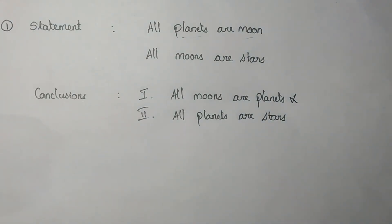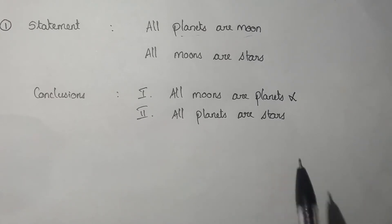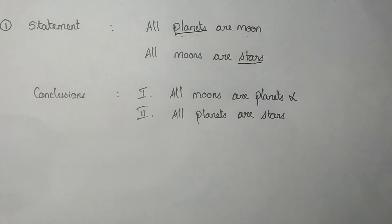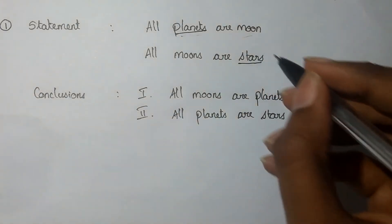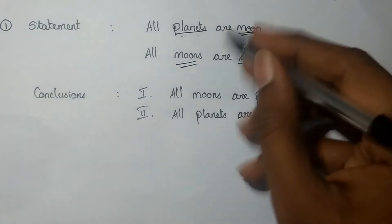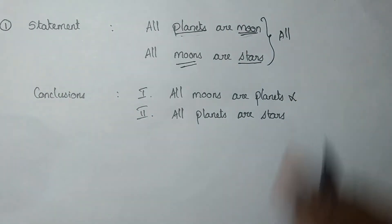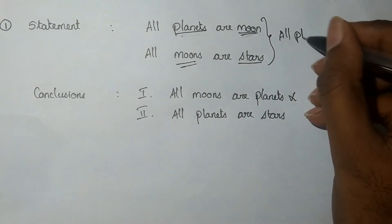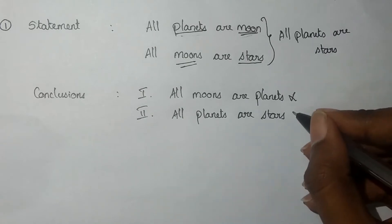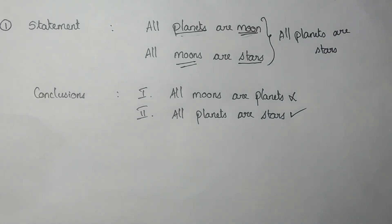For conclusion 2: All planets are moon, All moons are stars — applying the combination rule All plus All gives All. The starting term is 'planets', so the result is All planets are stars. Conclusion 2 is correct. The answer is option B — only conclusion 2 follows.